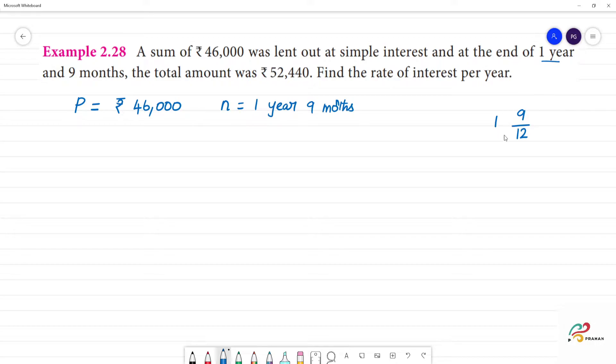This is the year conversion. 9/12 year. Canceling, 9 by 12 becomes 3 by 4. We get 1 and 3/4 years.